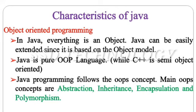Next, object oriented programming. In Java, everything is an object. Java can be easily extended since it is based on the object model. Java is a pure object oriented programming language, while C++ is semi object oriented. Java programming follows the OOPs concept. Main OOPs concepts are Abstraction, Inheritance, Encapsulation, and Polymorphism.